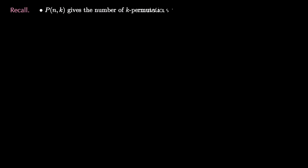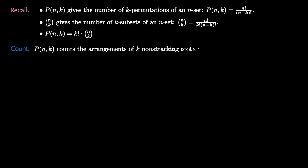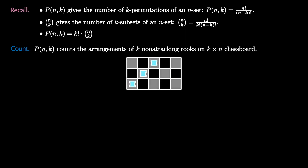Recall that we use the term P(n,k) to give the number of k-permutations of an n-set. We use n choose k to give the number of k-subsets of an n-set, and we note that P(n,k) is equal to k-factorial times n choose k. One way to think of P(n,k) is that it counts the arrangements of k non-attacking rooks on a k-by-n chessboard.